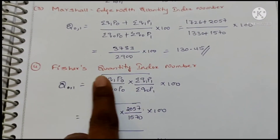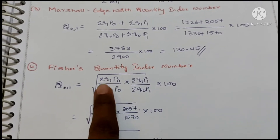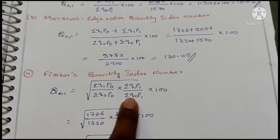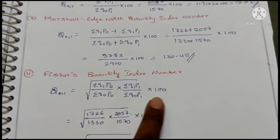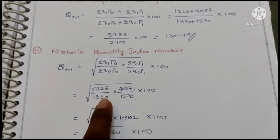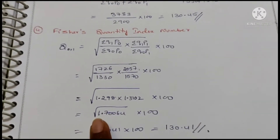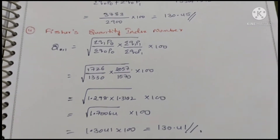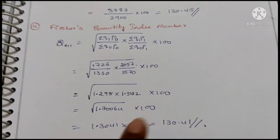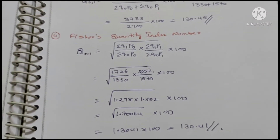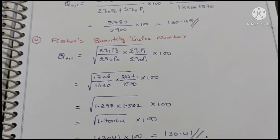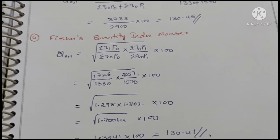Fisher quantity index: Q01 = √[(ΣQ1P0 / ΣQ0P0) × (ΣQ1P1 / ΣQ0P1)] × 100. Substitute the values, perform the division, then take the square root, and multiply by 100 at the end — outside the root. This is the same as the price index, just with P and Q swapped. Remaining formulas follow the same procedure.